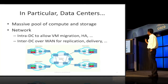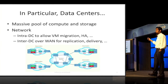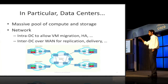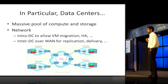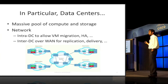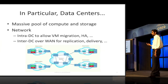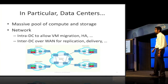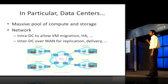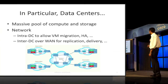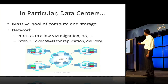If you zoom in particularly into a data center — the picture in the previous slide was just a scenario that applies not just to data centers but networks in general. You have routers connected to other routers over long distances through transport equipment. Inside the data center, you have a massive pool of compute and storage, with networks allowing these resources to be connected with each other — hundreds of thousands of virtual machines migrating for high availability, and inter-data-center connectivity for delivery, backup replication, and so forth.